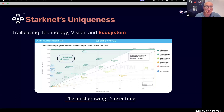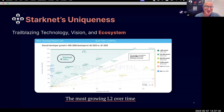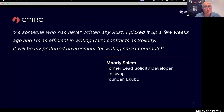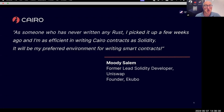First of all, I welcome you to the ecosystem. Some of you are already members of the ecosystem, and some of you are probably new. You should be proud of this ecosystem. It is the most growing layer two ecosystem in terms of developers. It is also a technology stack that is the next generation for writing smart contracts and developing applications over blockchains.